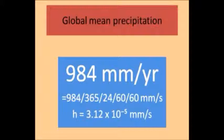I found this value for the average global precipitation on the web: 984 millimeters per year. Now I'm going to convert this to millimeters per second by dividing by 365 days in a year, 24 hours to the day, 60 minutes to the hour and 60 seconds to the minute. We get a rate of rainfall, denoted h for height, of 3.12 by 10 raised to the power of minus 5 millimeters per second.